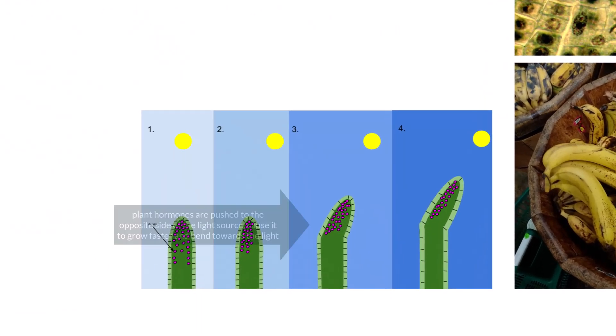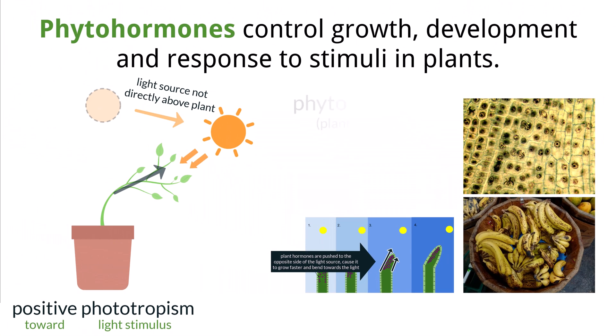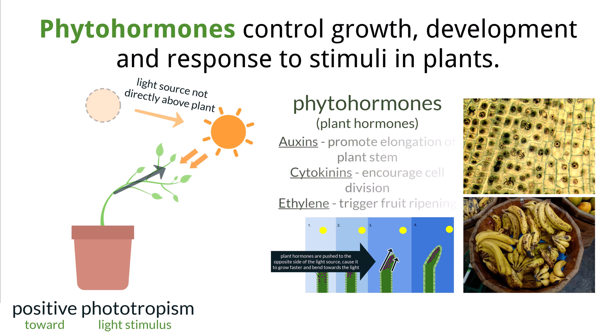This occurs because plant hormones cause the side of the plant away from the sunlight to grow faster, which causes it to bend toward the light. Plants control these directional responses by phytohormones, or plant hormones. Phytohormones are chemical messengers that coordinate plant growth and development. A variety of phytohormones are used in plants, including auxins, which promote elongation of a plant stem, as seen in phototropism.